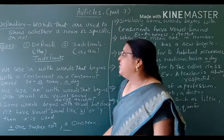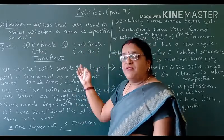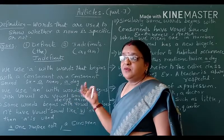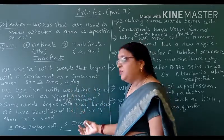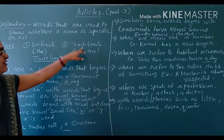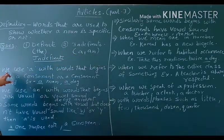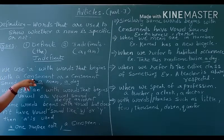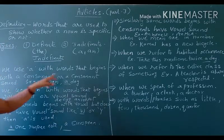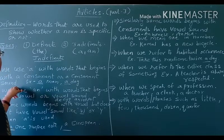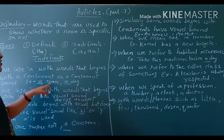Now let's go through indefinite articles — how and where we can put the indefinite article, and which indefinite article has to go where. The first rule: we use 'a' with words that begin with a consonant sound. With words that begin with a consonant sound, we always put the 'a' article. Like: a man, a dog.